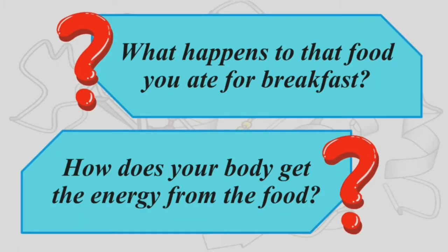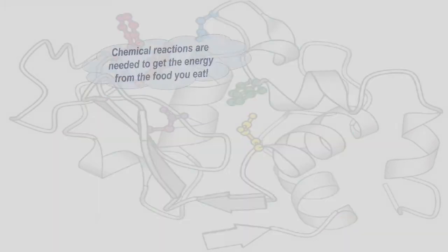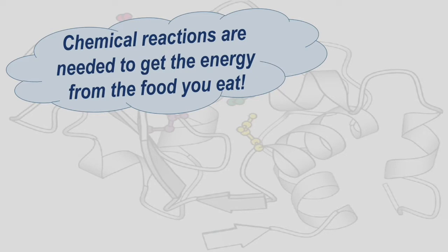Chemical process, or chemical digestion, is the change in the chemical composition of food — meaning the food is converted from complex substances or molecules to simpler molecules which are absorbed by the body and used as energy. It takes place using enzymes found in our body. Chemical reactions are needed to get the energy from the food you eat.